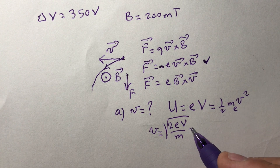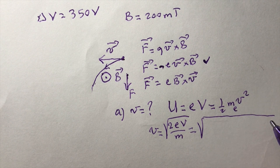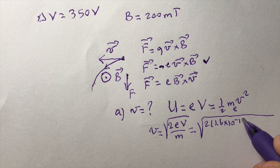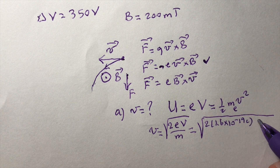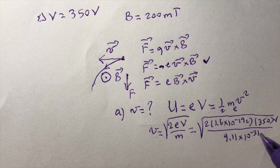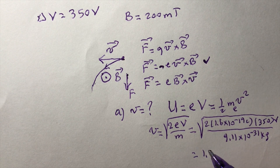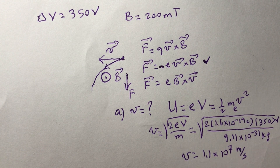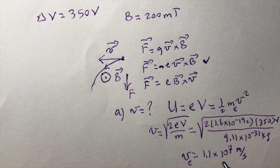Plugging in numbers: 2 × (1.6 × 10⁻¹⁹ C) × 350 V, divided by (9.11 × 10⁻³¹ kg). The result is approximately 1.1 × 10⁷ meters per second. This velocity is less than the speed of light, so we're fine.